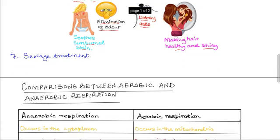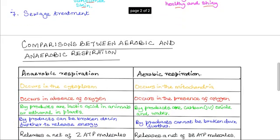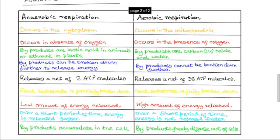Now we compare aerobic and anaerobic respiration. This table lists the main differences between the two types. Anaerobic respiration occurs in the cytoplasm, while aerobic begins in the cytoplasm but most of it occurs within the mitochondria. Anaerobic respiration does not require oxygen, while aerobic respiration requires oxygen to be present.